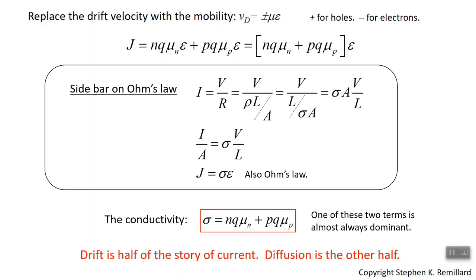Drift current is only half the story. There is another way for charge carriers to move inside a semiconductor, and that's by diffusion. If you have a region with an excess of electrons and wait a little while, those electrons smooth out — they've moved. While they're moving and smoothing out, there's charge motion, which is current. That's called the diffusion current, and that's something we'll have to talk about next.